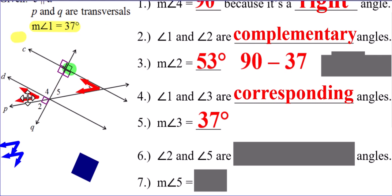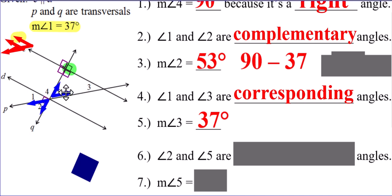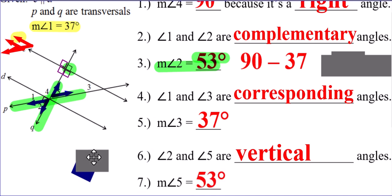Next up, angles two and five. Angle five just so happens to be an opposite angle from angle two — two angles formed by two intersecting lines. This line here and this line here together form the opposite angles of two and five. So what do we call a pair of opposite angles formed by two intersecting lines? We call them a pair of vertical angles. We already knew the measure of angle two was 53 degrees. Vertical angles are congruent, so if angle two is 53 degrees, then angle five also has a measure of 53 degrees.